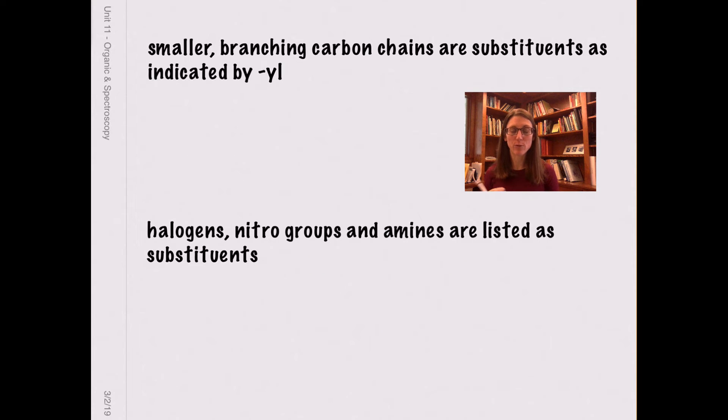I already pointed out that smaller branching carbon chains are going to be substituents, and we have a Y-L ending at the end of those. Other common substituents you're going to see are halogens, which are indicated as substituents by changing their name, like chlorine into chloro or iodine into iodo. You can also find nitro groups, which their name as a substituent is just nitro. And amines, so NH3 or NH2 or N with carbons on it, those are going to be called amino.